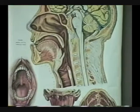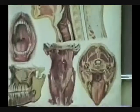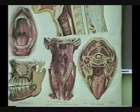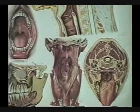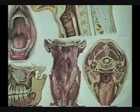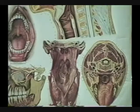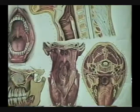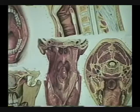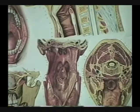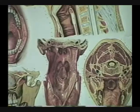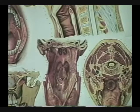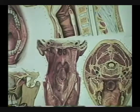This opening is what? Fauces. This structure is what? Epiglottis. Now, why am I talking about the epiglottis? I thought we did that in the respiratory system. Because it's part of the digestive system, making sure that food goes not down into the windpipe, but around and down into the esophagus.